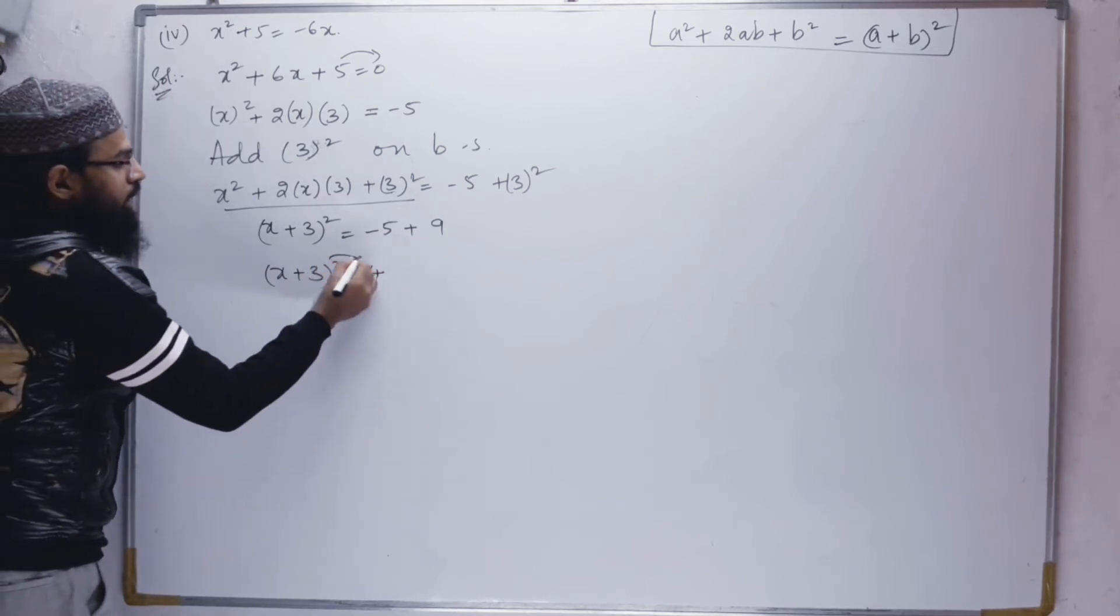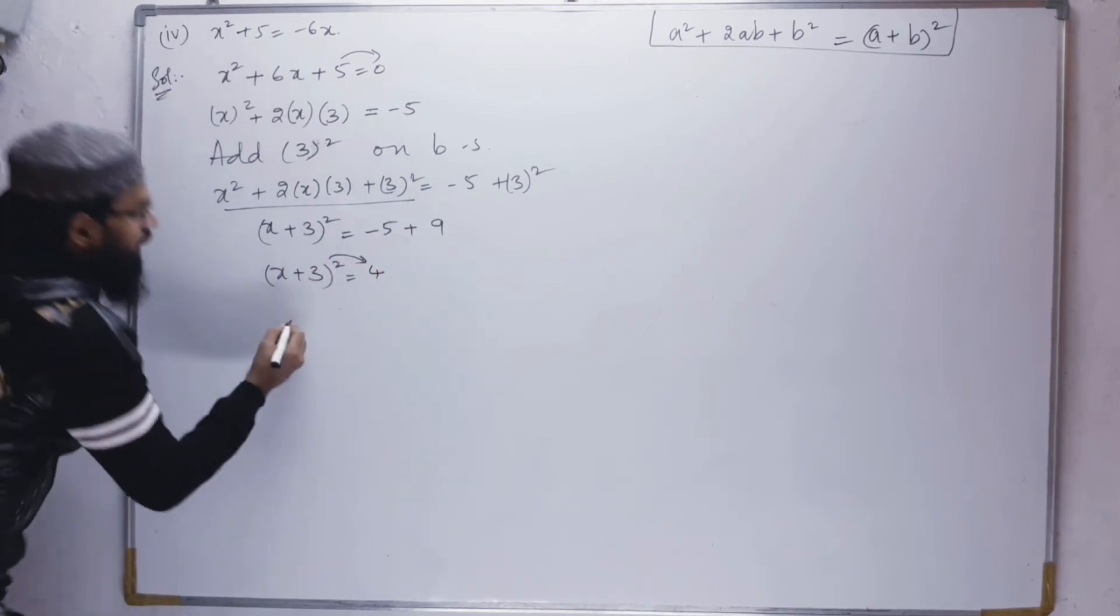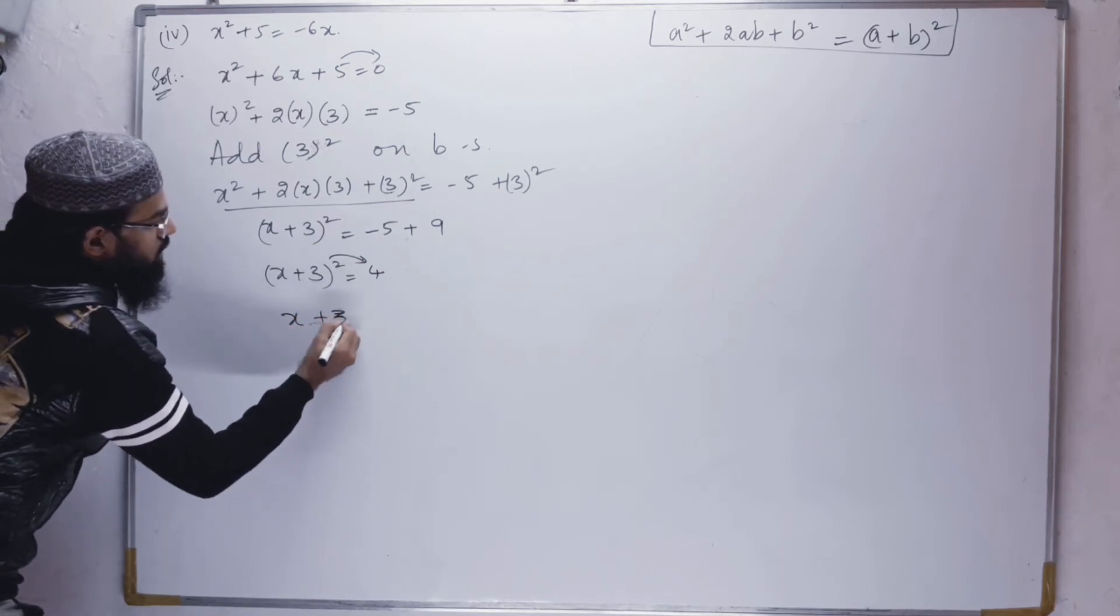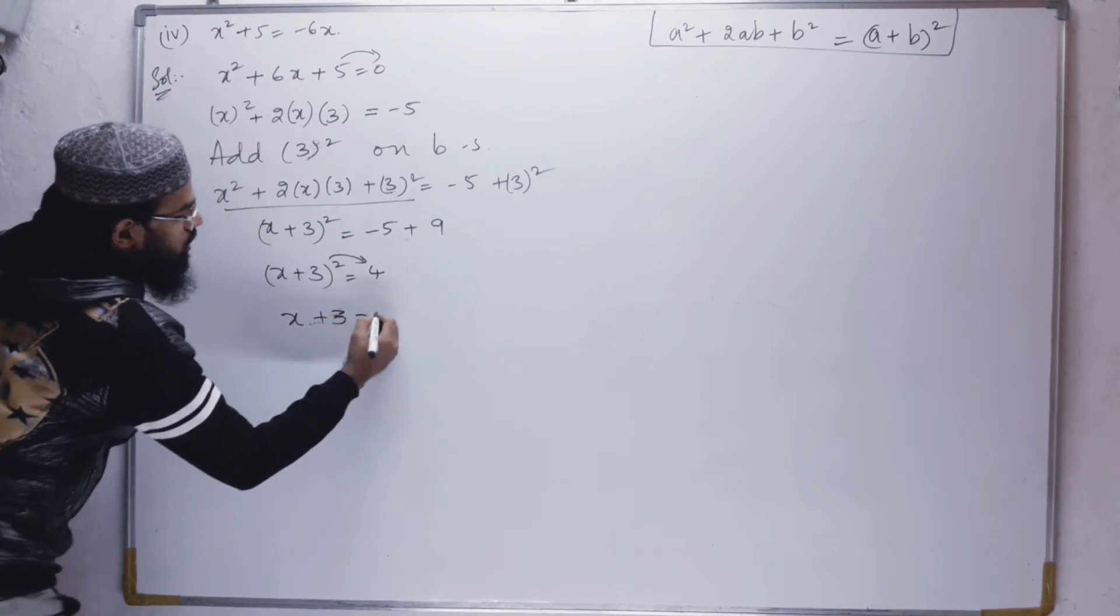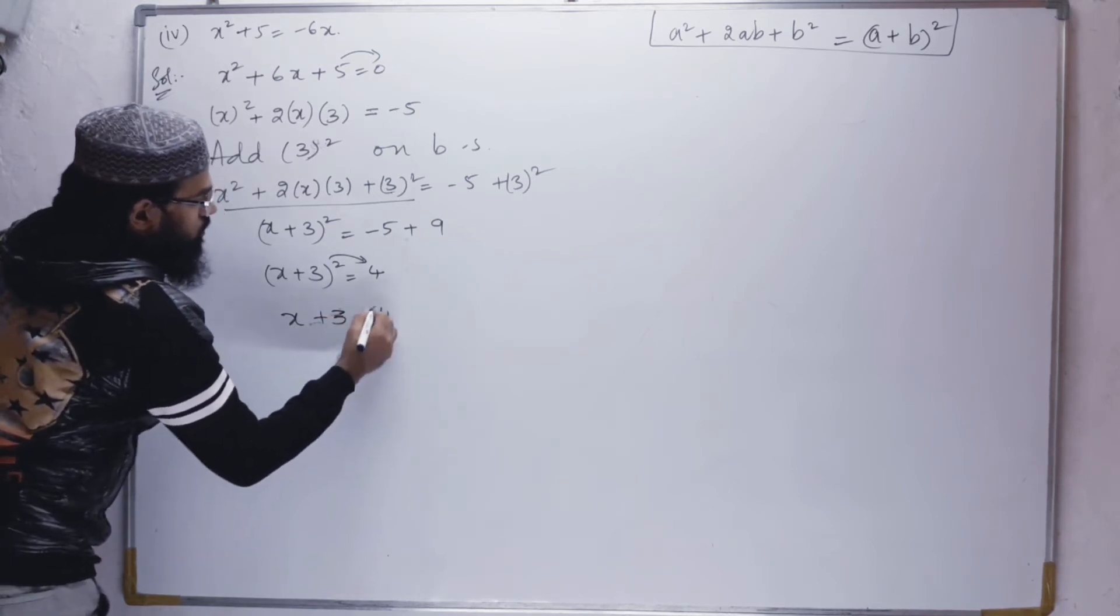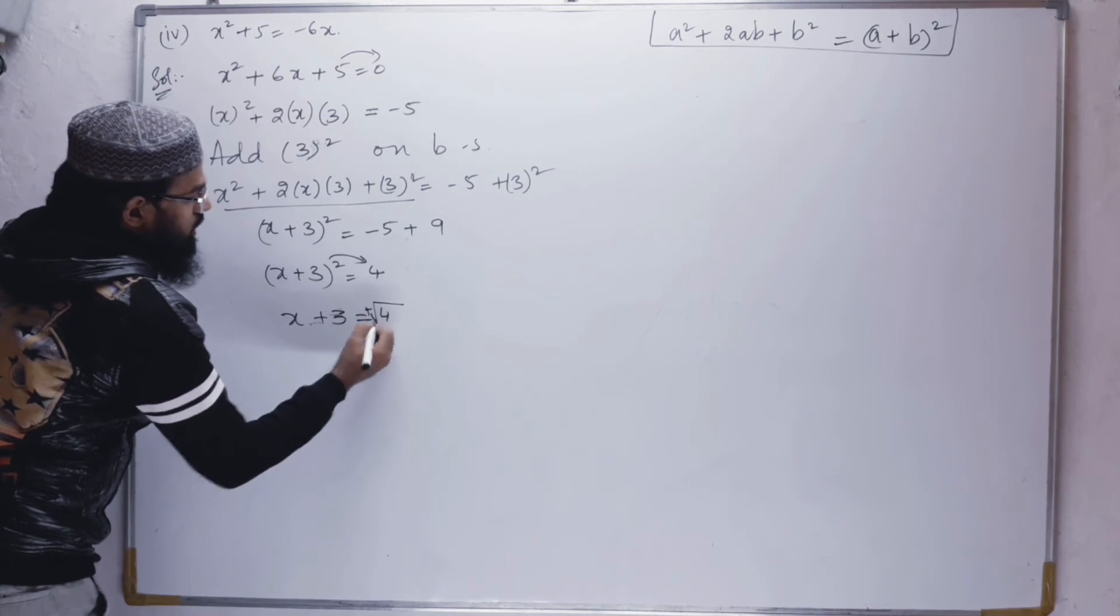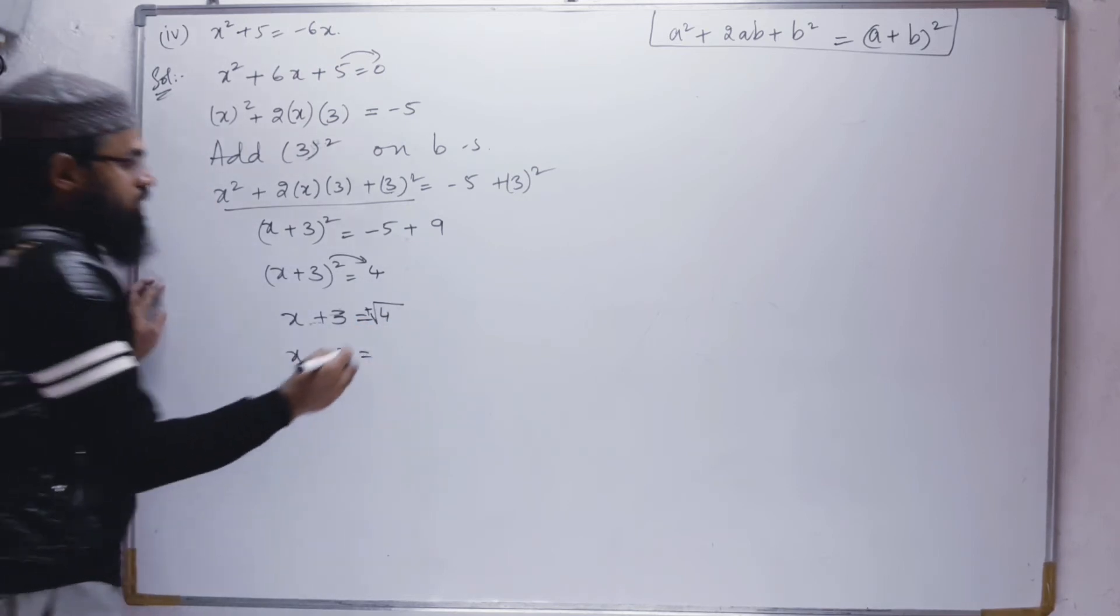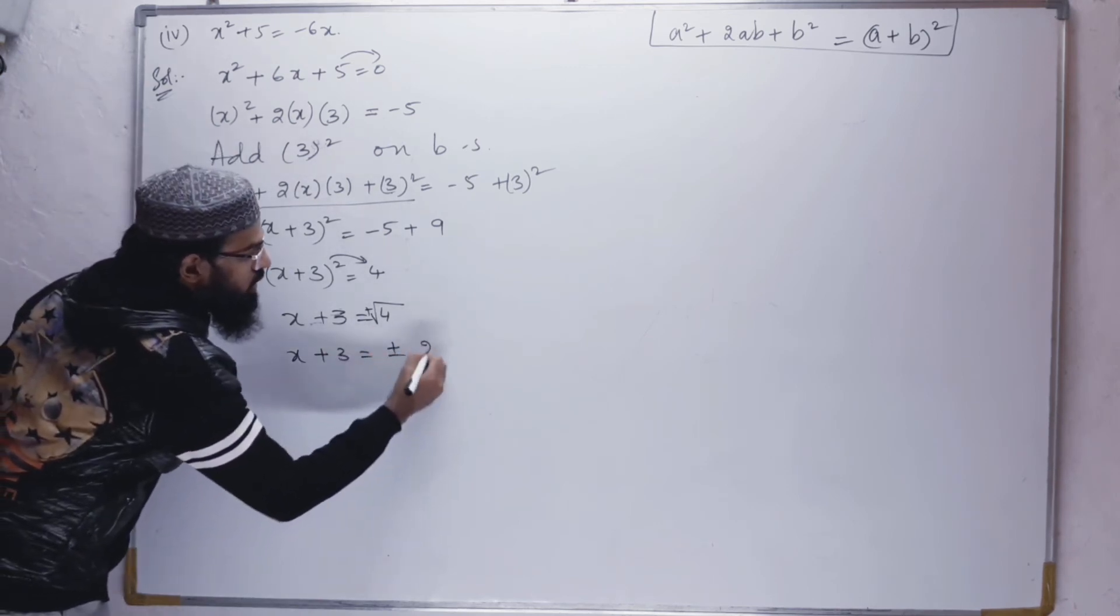Next we will take the square root of both sides. So x + 3 = ±√4. The square root of 4 is 2, so x + 3 = ±2.